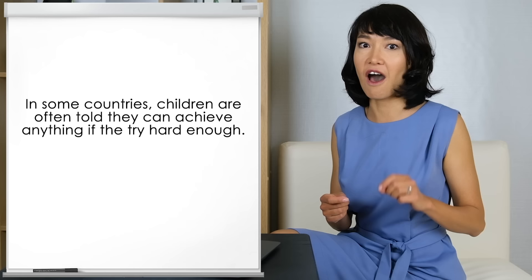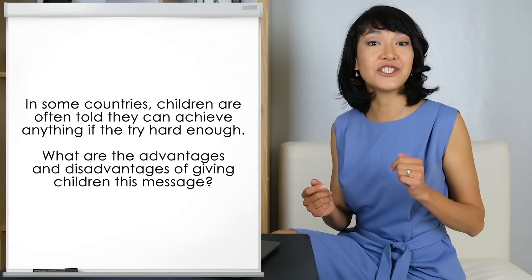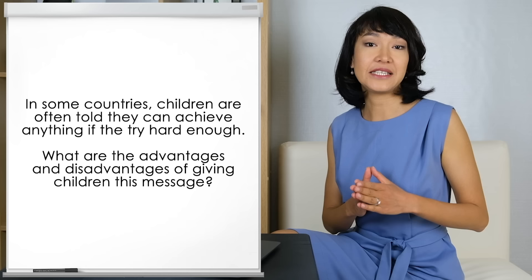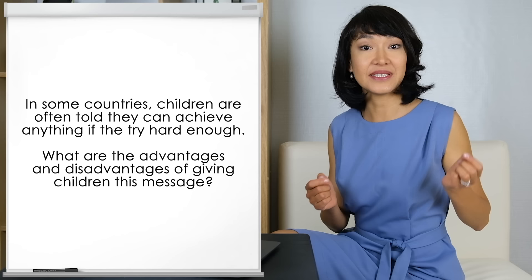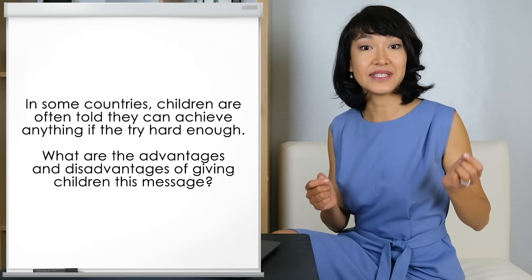Let's look at some examples of these linking words in sentences we can use in IELTS Writing Task 2 essays like this one. The topic is: 'In some countries, children are often told that they can achieve anything if they try hard enough. What are the advantages and disadvantages of giving children this message?' We need to write at least 250 words and probably four paragraphs. The first paragraph presents the essay question and introduces our point of view.